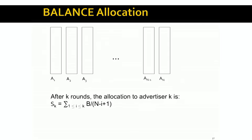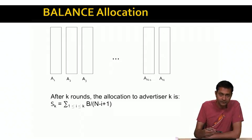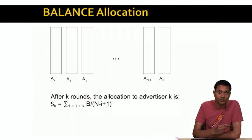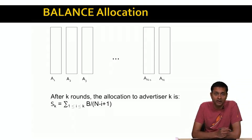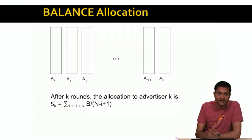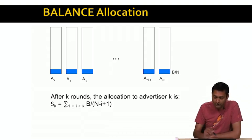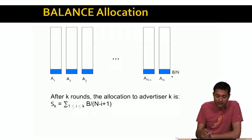Now let's see what the balance algorithm does. Imagine these empty rectangles represent the unspent budget of each of the advertisers A1 through AN. As we assign queries to the advertisers, we're going to color these rectangles. When the round one queries come in, the balance algorithm is going to assign an equal number of round one queries to each advertiser A1 through AN. Since there are B round one queries, each advertiser is allocated B/N of the round one queries, as shown by the blue coloring on the slide.